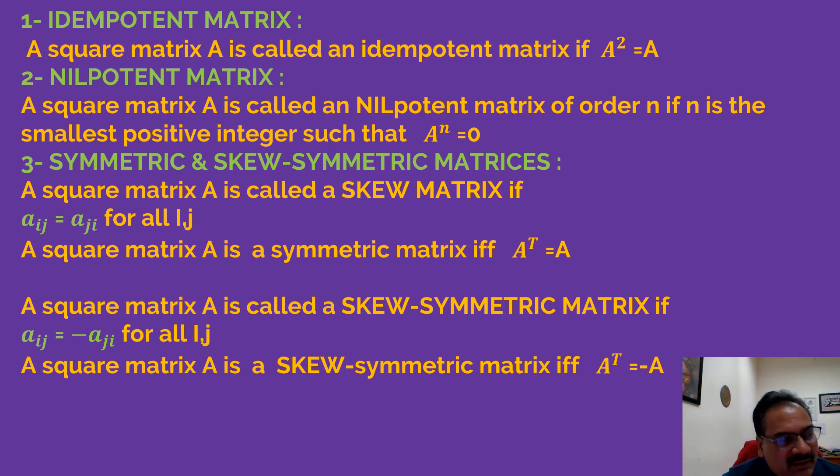And what is a nilpotent matrix? A square matrix A is called a nilpotent matrix of order n if n is the smallest positive integer such that A^n = 0. Then in this case, this matrix is called nilpotent matrix.